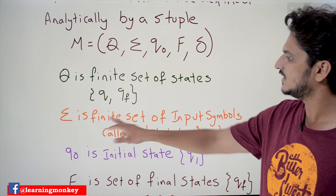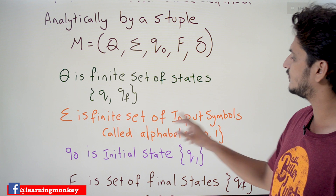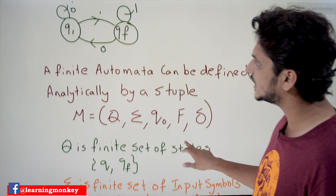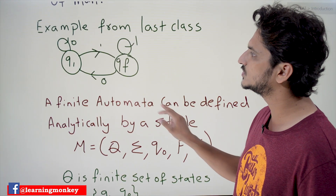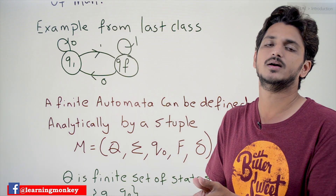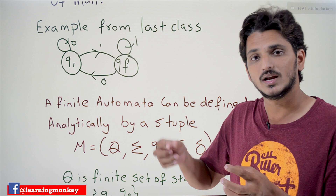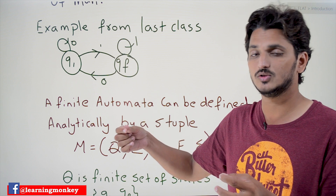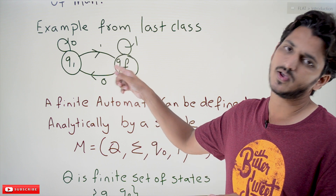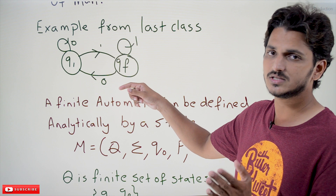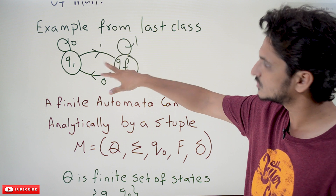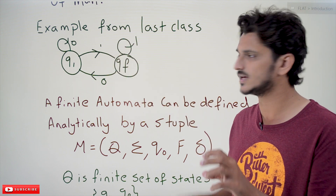Sigma is a finite set of input symbols, also called alphabets. In our example, this finite automata works on input symbols 0 and 1. This finite automata will identify strings that contain the character 1 at the end — the last character should be 1. Those strings are accepted by this finite automata.